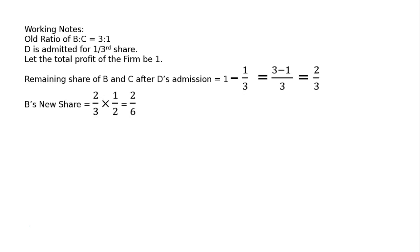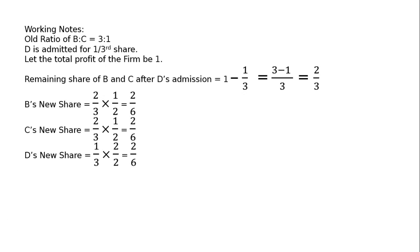Not in the ratio of 3:1. B's new share is 2/6, C's new share is 2/3 multiplied by 1/2, that is also 2/6, with B and C sharing in equal ratio. D's new share is 1/3, multiplied by 2/2, that is 2/6. Therefore, the new ratio of B:C:D is 2:2:2, which equals 1:1:1.